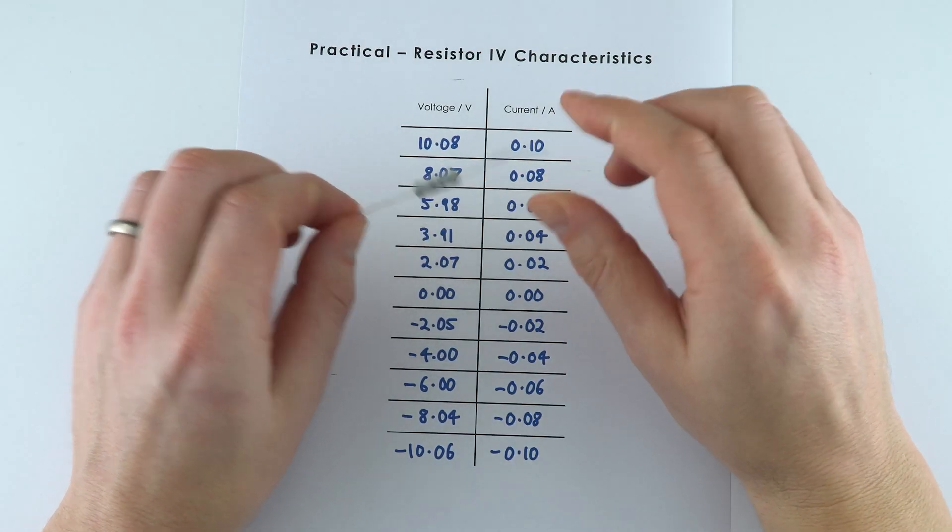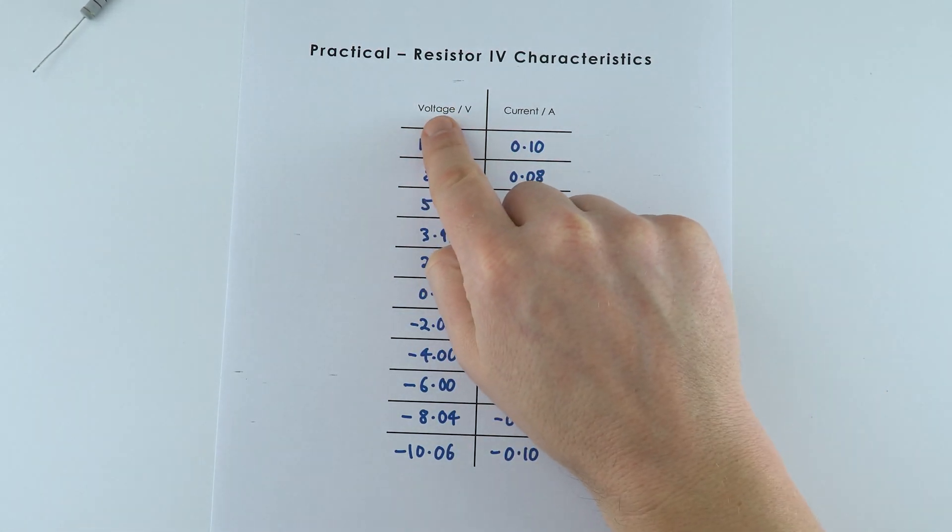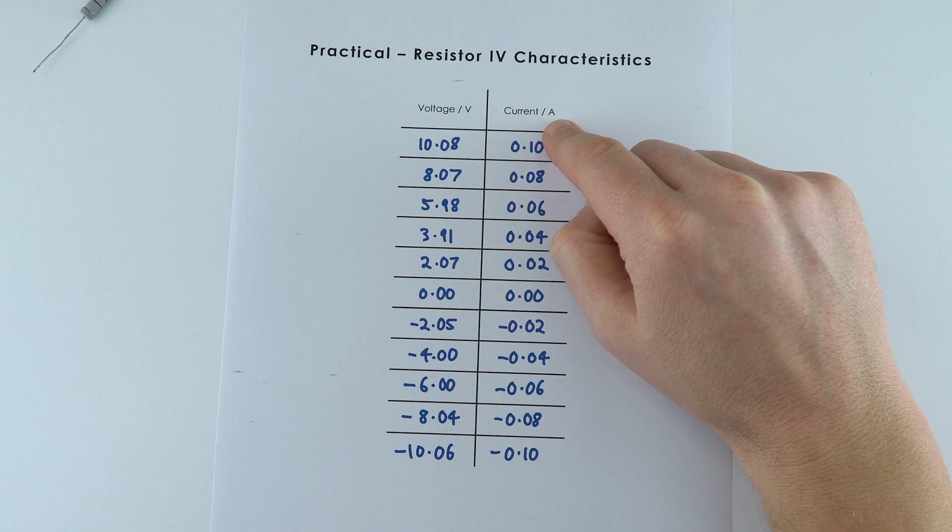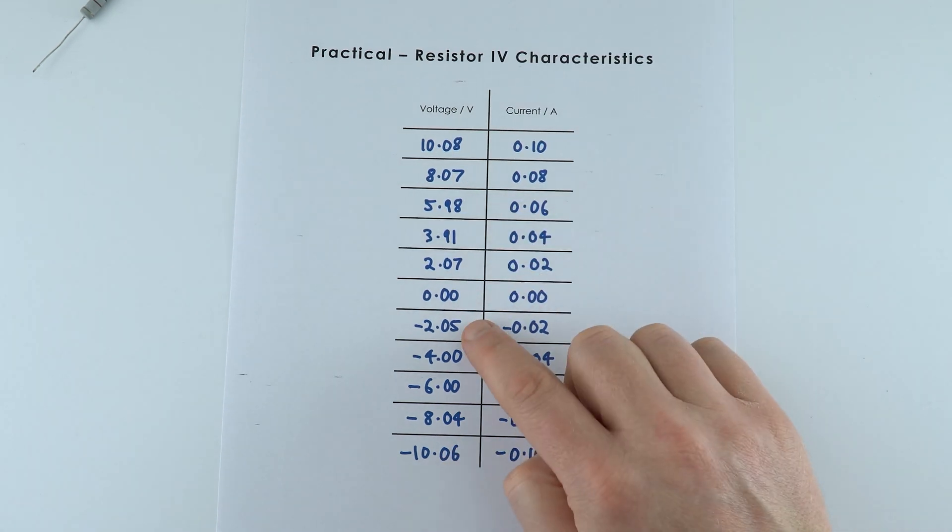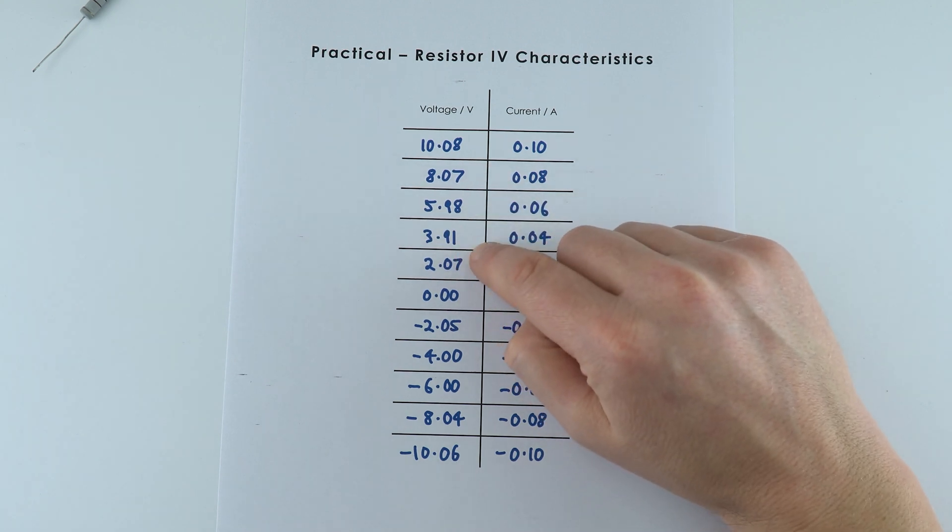This is the data I took when we had this single resistor and we looked at both the potential difference, or the voltage across it, and the current through it. I got my values by pausing the video and choosing the value at that time, but some of them did fluctuate very slightly.